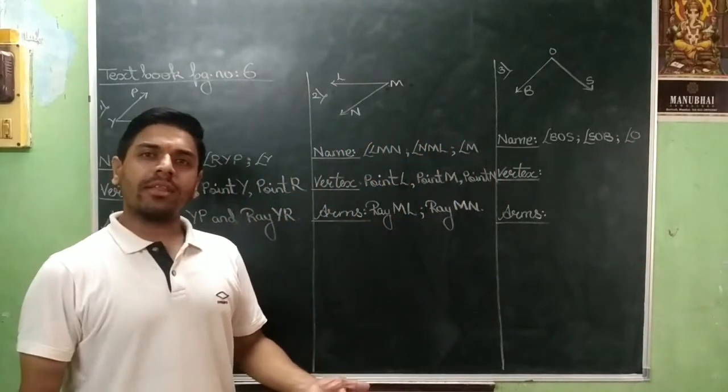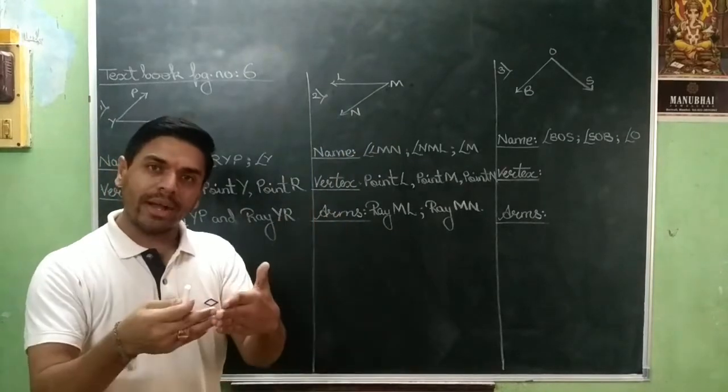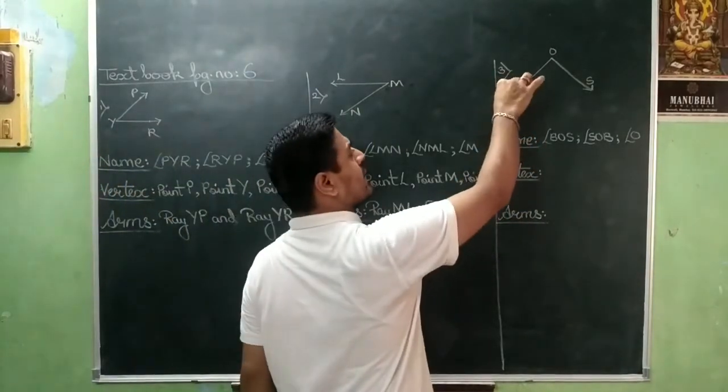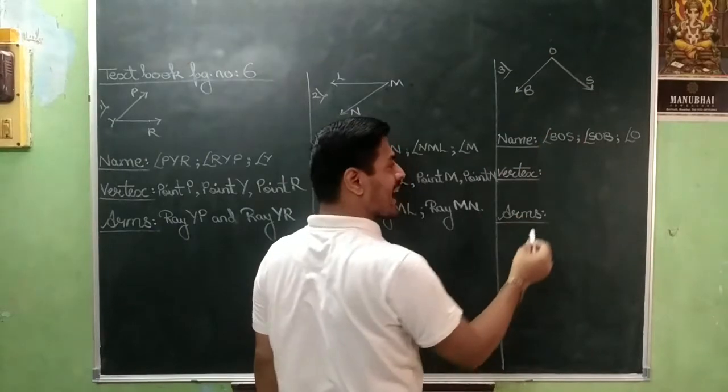The vertex, that is the three points which are joined. So they are point B, point O and point S.